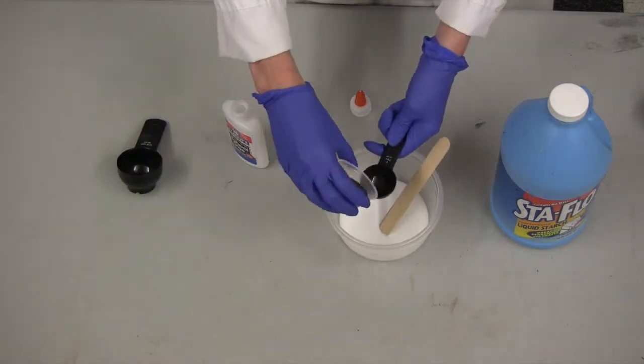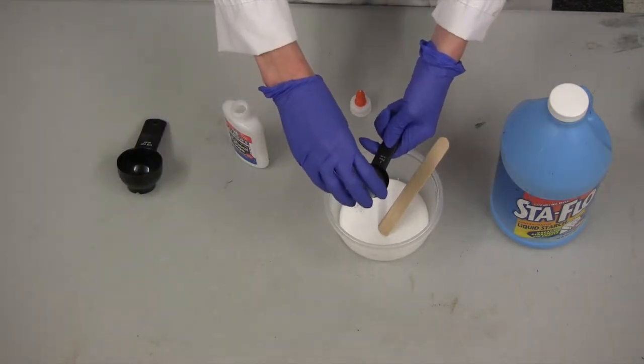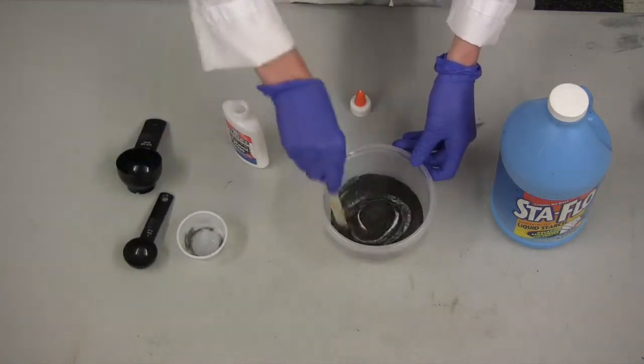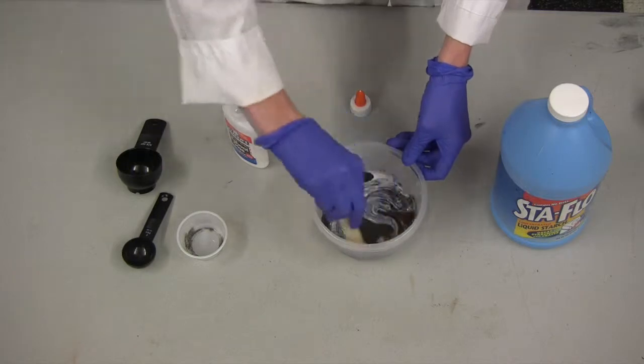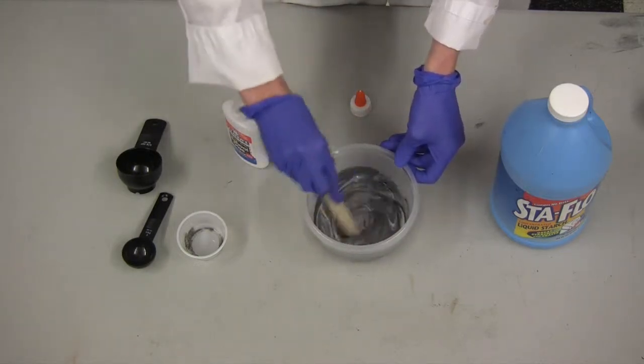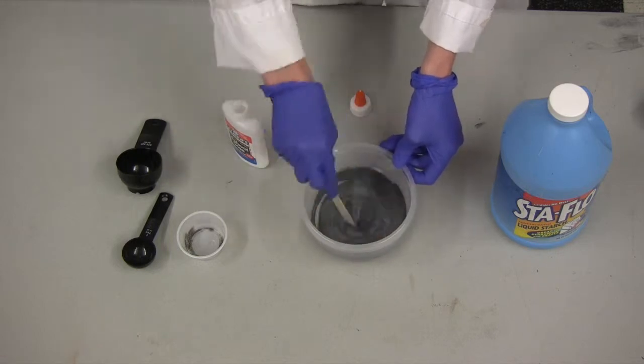Then you're only going to add two tablespoons of iron oxide powder. Stir that around. You want to make sure that all the dry powder gets stirred up into the glue so that your slime is magnetic all the way through.